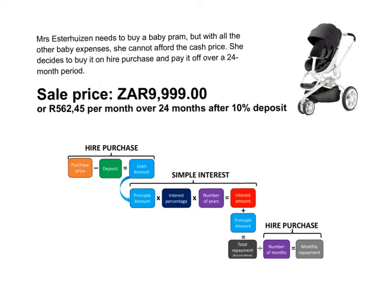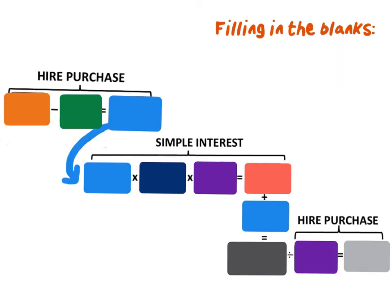In this case we have Mrs. Estrezon, and she needs to buy a baby pram — this is when her little boys Liam and Henry were born, so there are a lot of expenses and she can't just pay 10,000 Rand down for a pram. She is going to pay it off over a period of time. Let's start filling in the diagram. The price of the pram was 9,999 Rand, there was a 10% deposit, the monthly repayments were 562 Rand and 45 cents, and once again this is over 24 months.